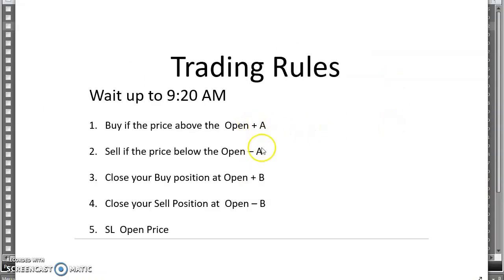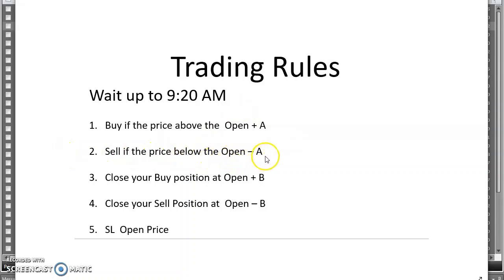We calculated three numbers: A, B, and C. After opening the market at 9:15, wait five minutes. Then buy if the price is above open price plus A, sell if the price is below open price minus A, close your buy position if it reaches open plus B, close your sell position at open minus B, and keep a stop loss at the opening price.